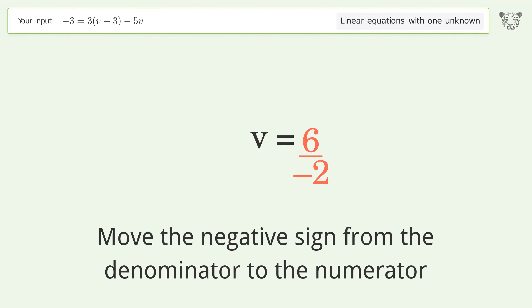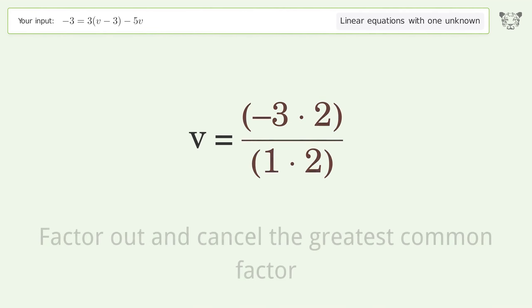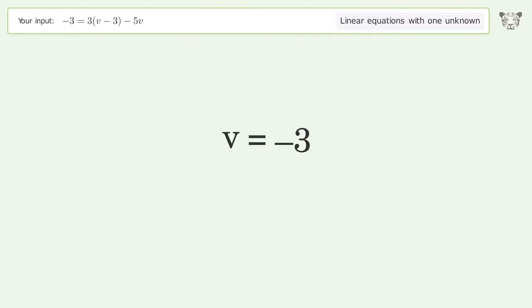Move the negative sign from the denominator to the numerator. Find the greatest common factor of the numerator and denominator. Factor out and cancel the greatest common factor. And so the final result is v equals negative 3.